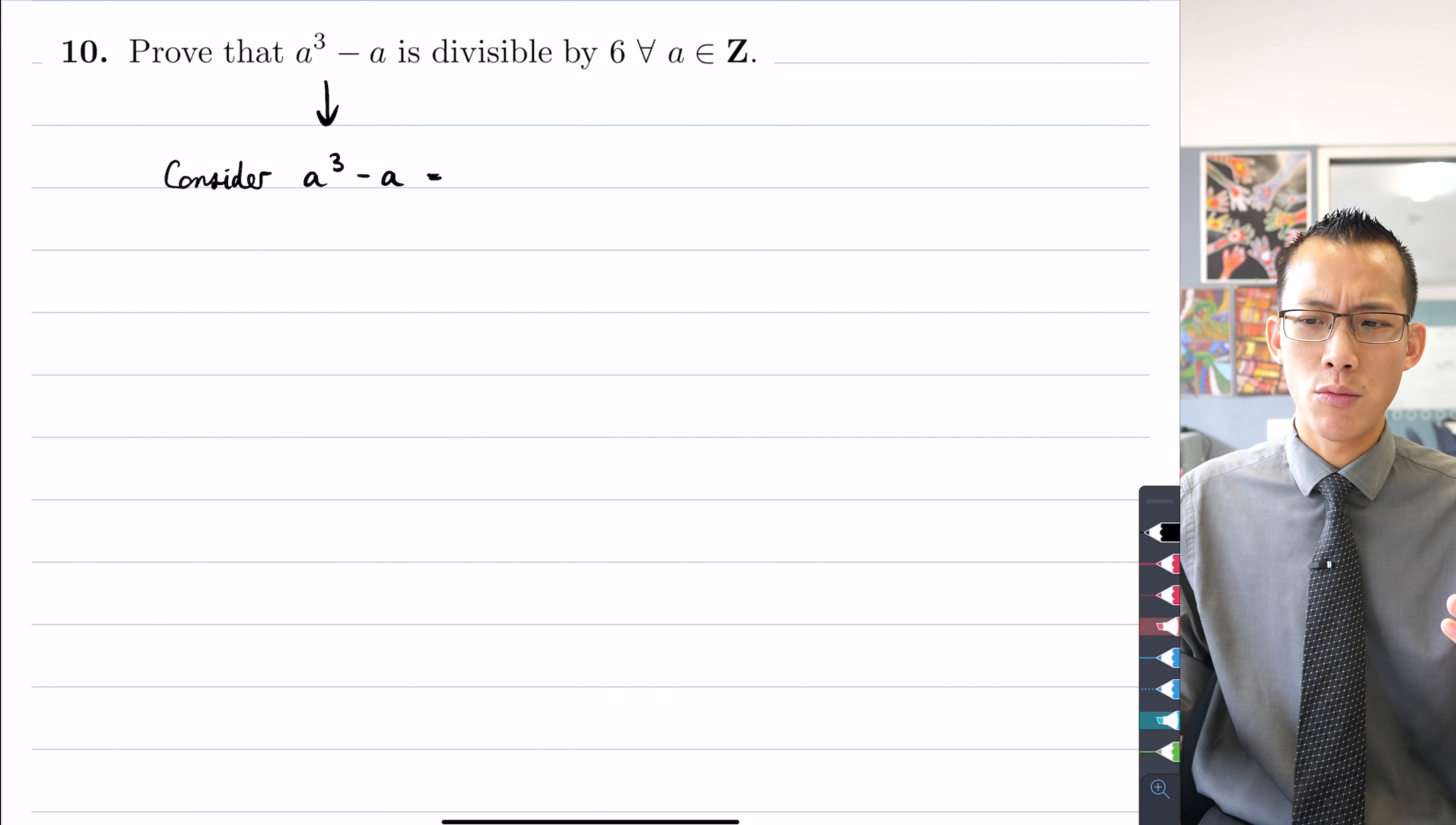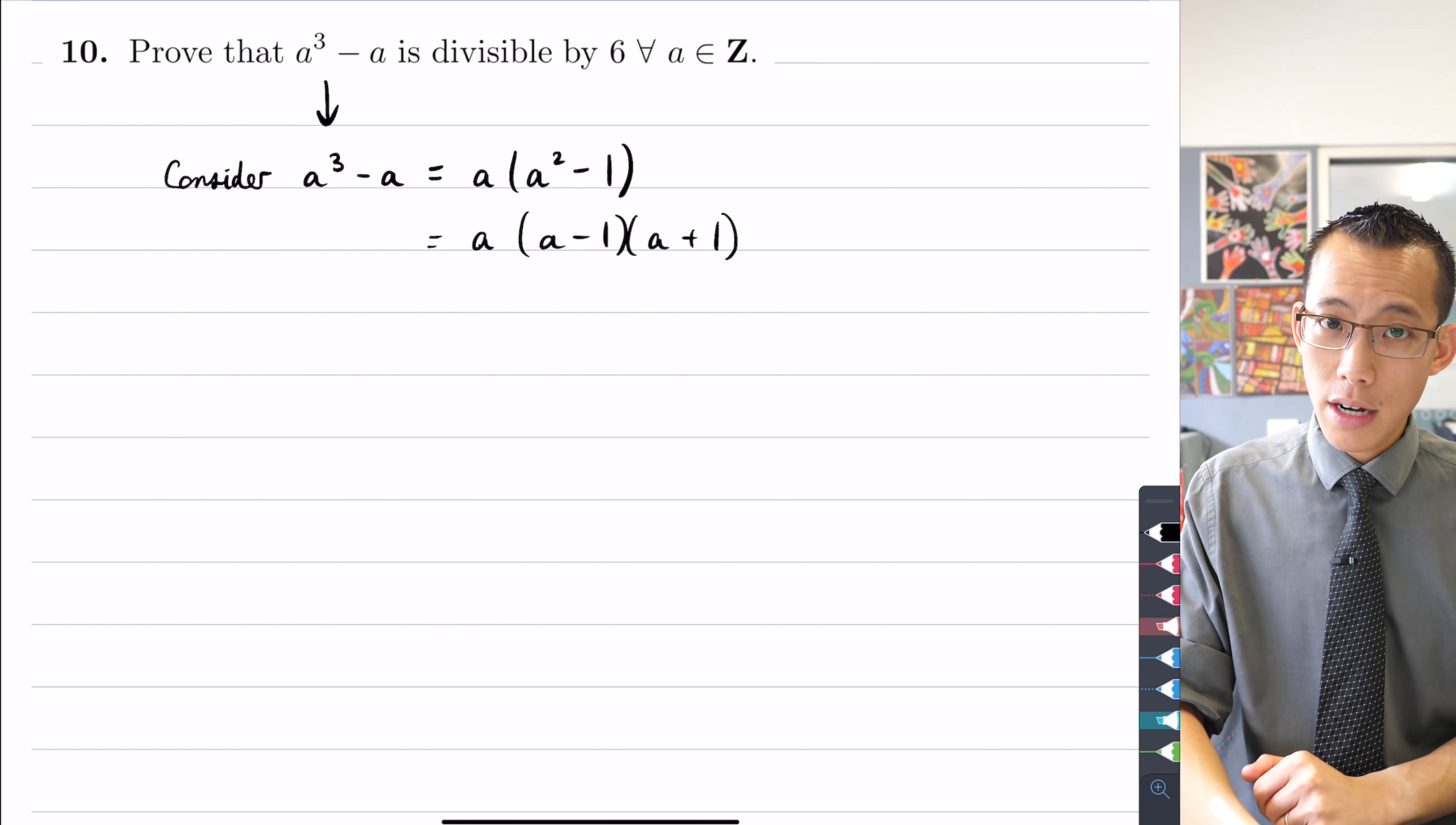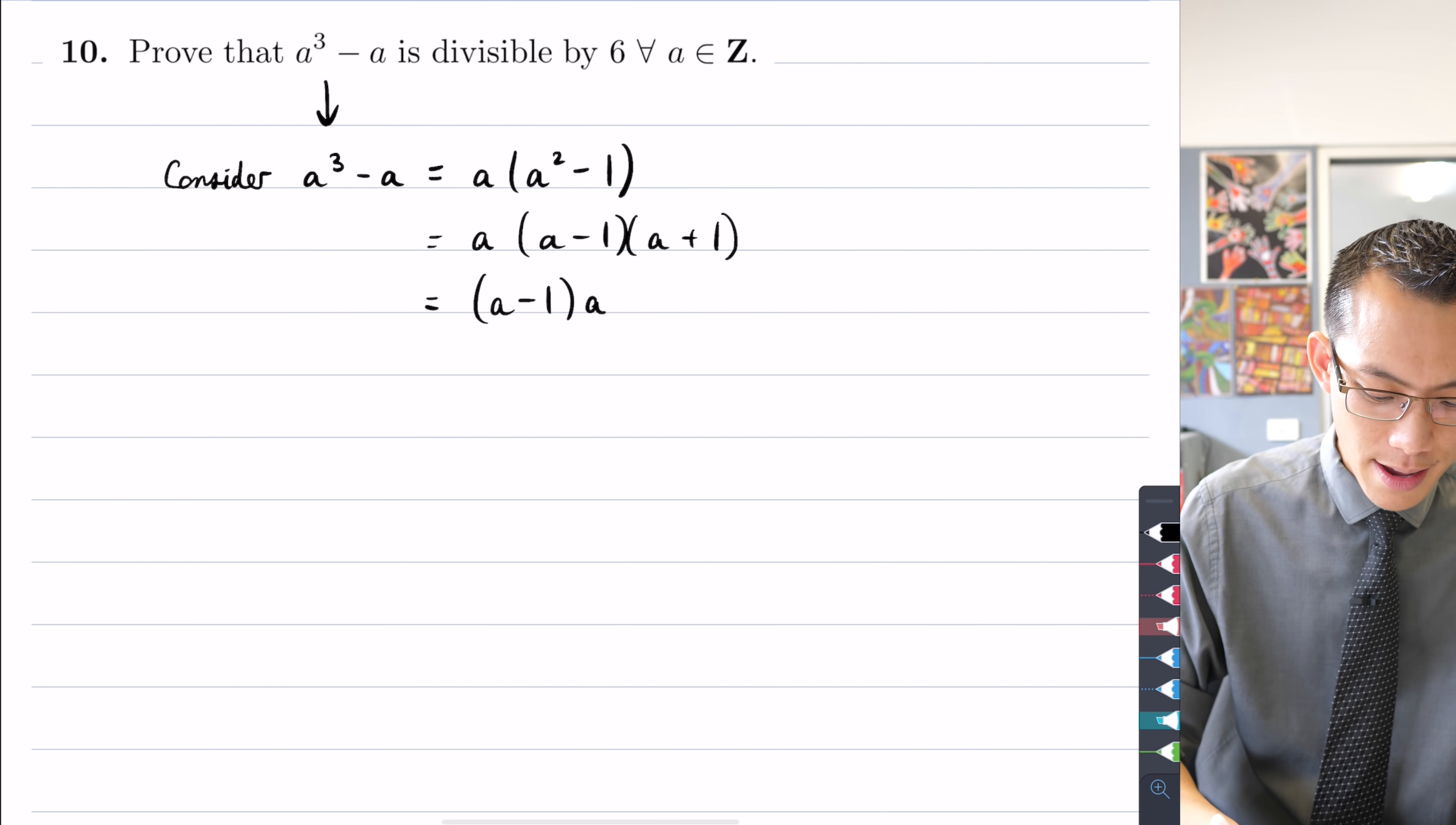So I'm considering a³ - a. Now what can I do with this? The most obvious thing that jumps out at you is well I can factorize this, in fact I can factorize it a couple of times. I can first take out that common factor of a that leaves me with a² - 1, and then you think fantastic, I have difference of squares here, so I've got a outside of (a - 1)(a + 1). And at this point it's all factorized and you might think well what can I do with this?